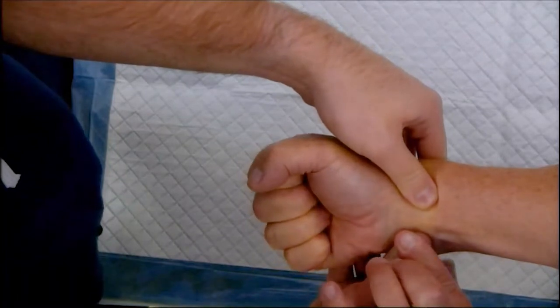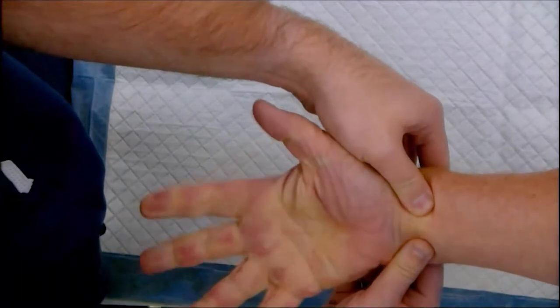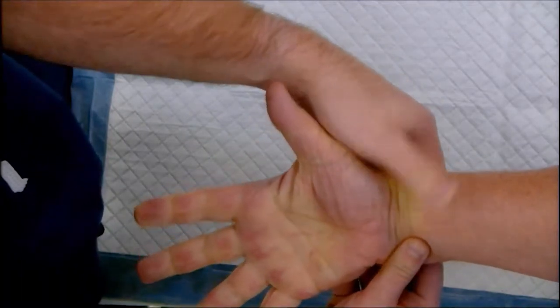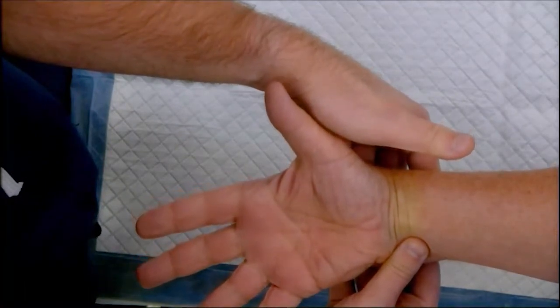When the patient opens their fist, the hand should appear blanched. Next, release the radial artery and if color returns to normal, that means perfusion shows patency of the palmar arch.